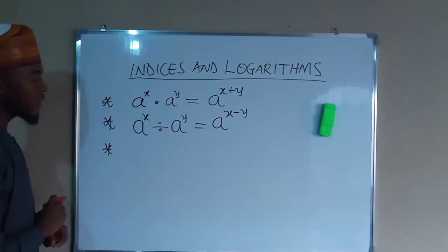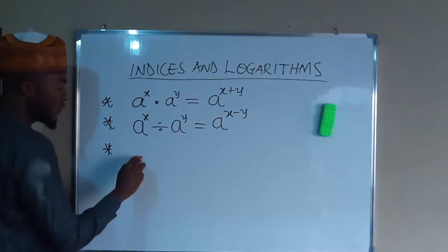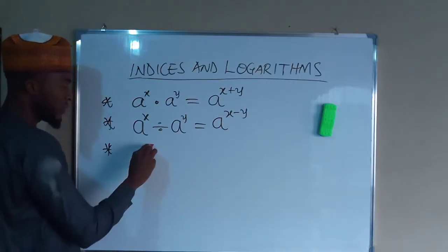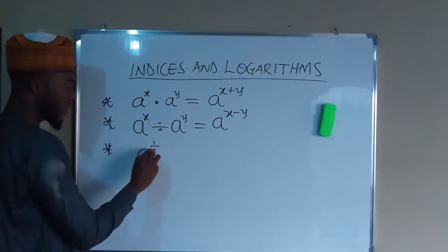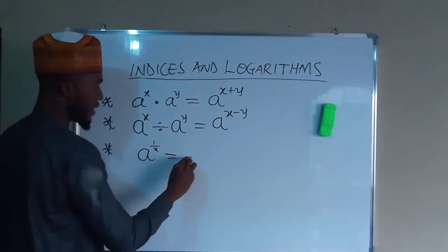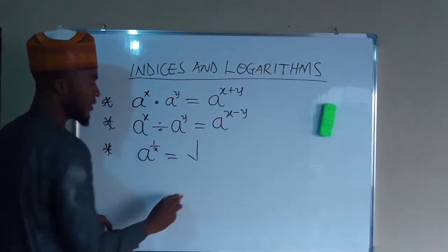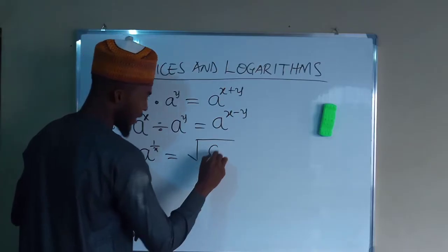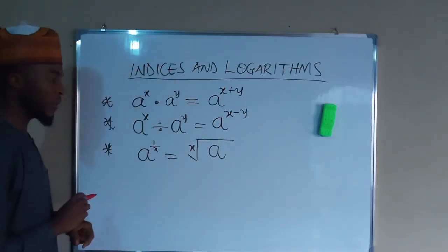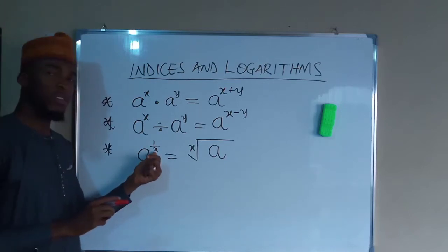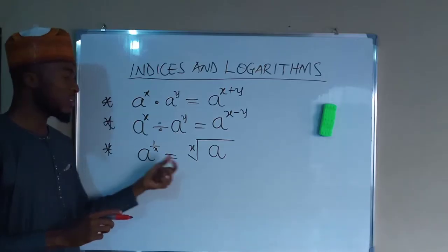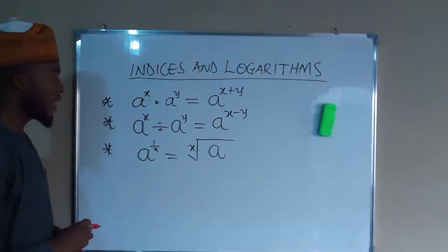Another law is: if you have a number A raised to the power of 1 over X, this is the same thing as taking the root of A with an index of X. So when X is equal to 2, you need to take the square root of A, and so on.